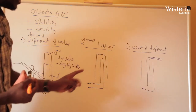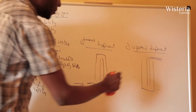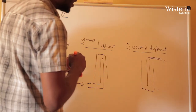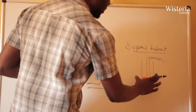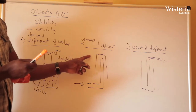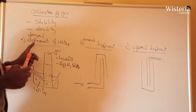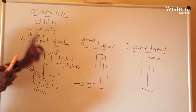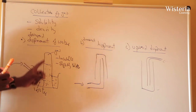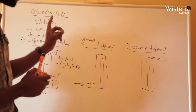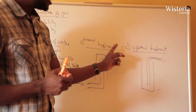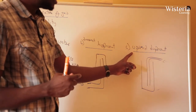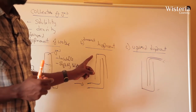We have the downward displacement and the upward displacement, and these two methods depend on the density of the gas. If the gas is heavier than air, we are going to use the upward displacement. If the gas is lighter than air, we are going to use the downward displacement. So for collection of a gas we use either the downward displacement of water, downward displacement, or upward displacement depending on the solubility and density.